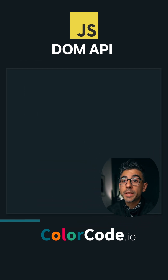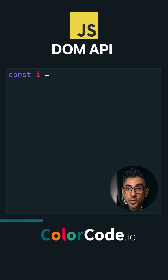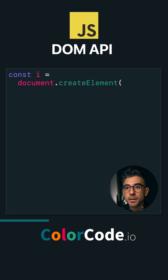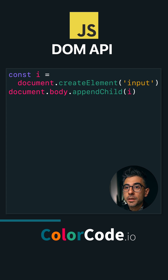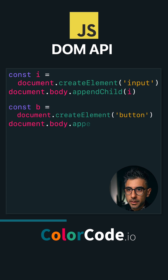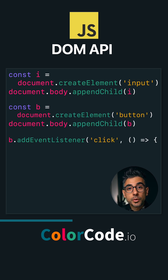First of all, we can create an element using document.createElement. Give it an element type, say an input, and append it to the body using appendChild. Let's do the same with the submit button. We'll add a click event listener.